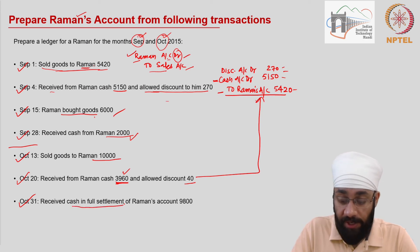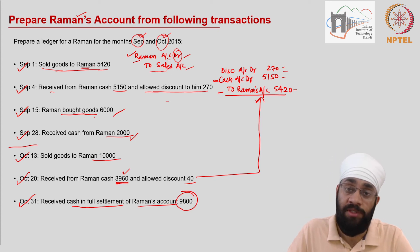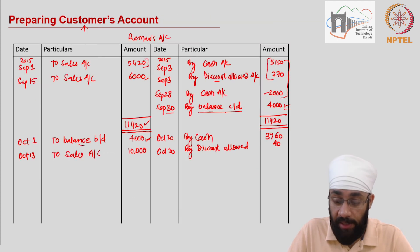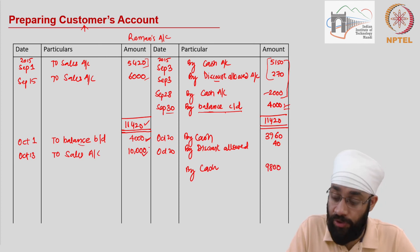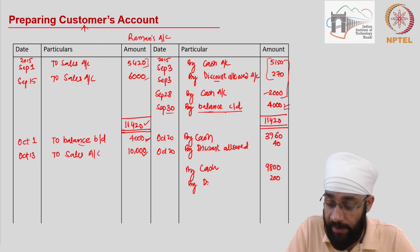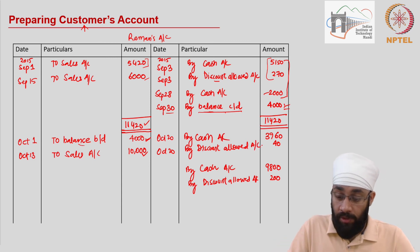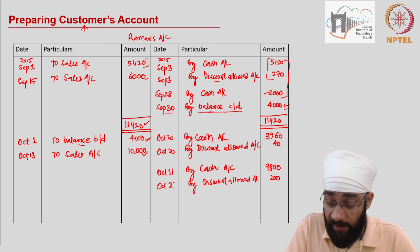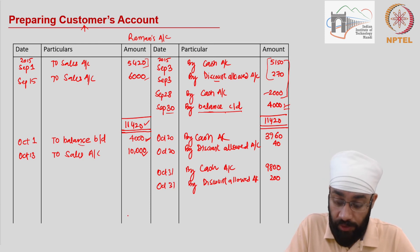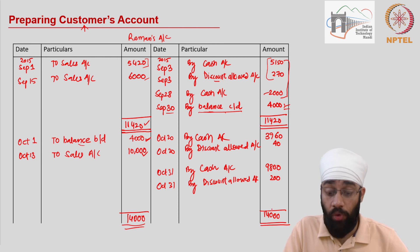The final transaction: you receive cash in full settlement of Raman's account for 9800. Whatever balance was left in Raman's account has been settled for 9800, so write 'By Cash' 9800. Since 10,000 was due, the discount is 200, so write 'By Discount Allowed' 200. This transaction is on October 31st. At the end of October, you have 14,000 on the debit side and 14,000 on the credit side — there is no balance left in the account, meaning the customer has paid all dues.